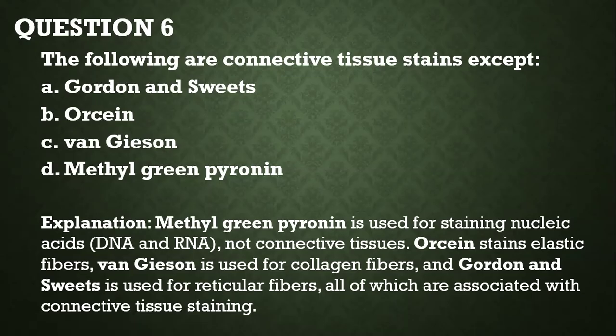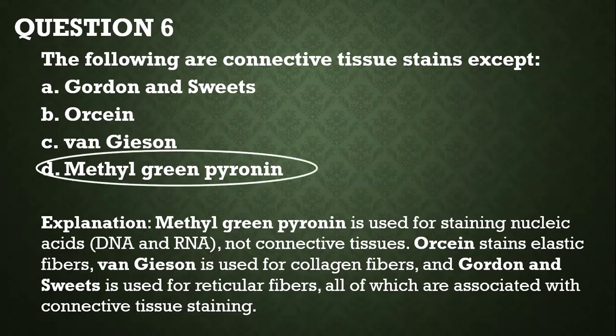Next question: the following are connective tissue stains, except — A: Gordon and Sweet's, B: ORCEIN, C: Verhoeff/Weigert, D: methyl green pyronin. The answer is methyl green pyronin, because it is used for staining nucleic acids like DNA and RNA, not connective tissue. ORCEIN stains elastic fibers, Verhoeff/Weigert stains collagen fibers, and Gordon and Sweet's is used to stain reticular fibers — all associated with connective tissue staining.